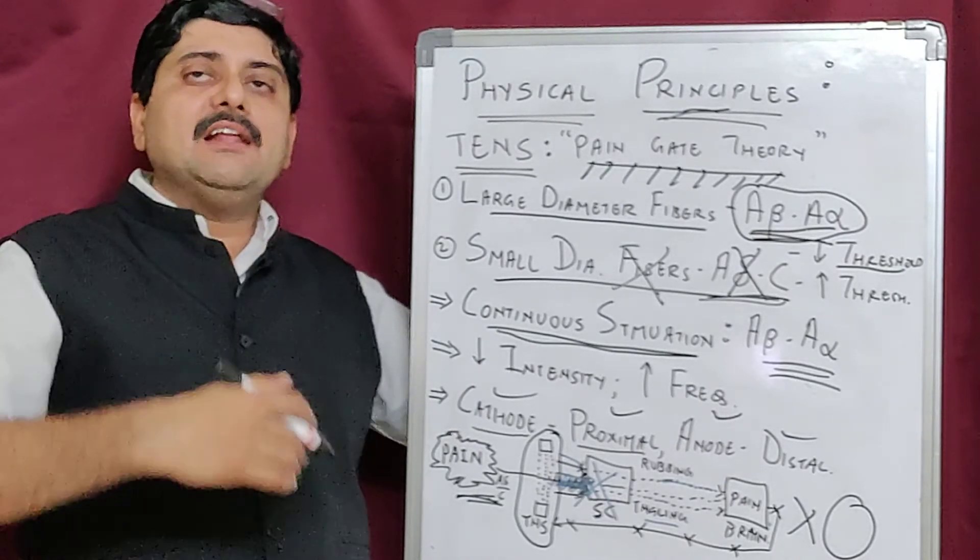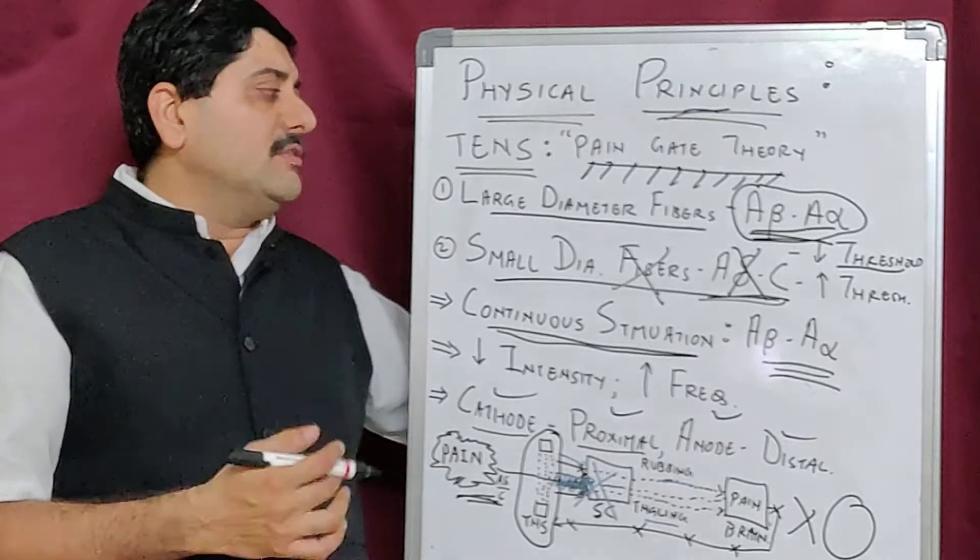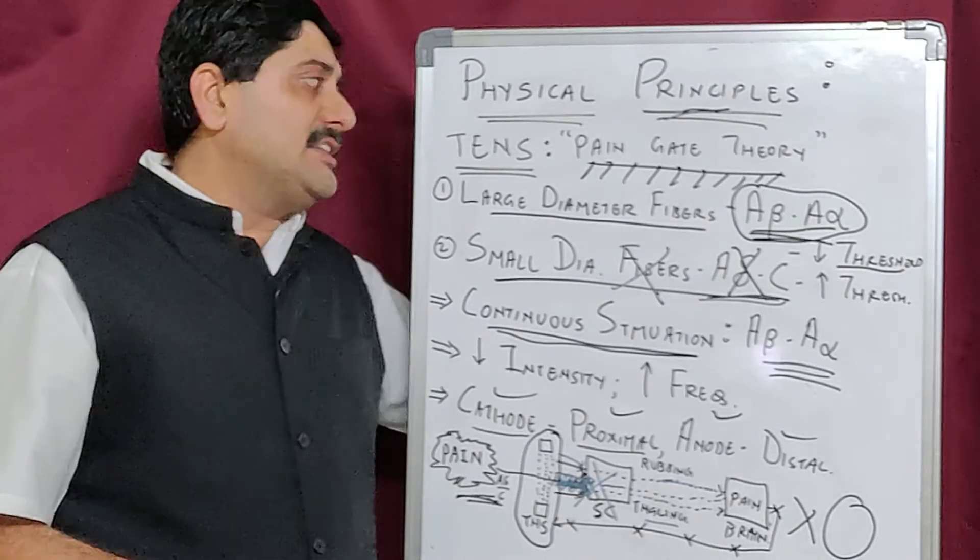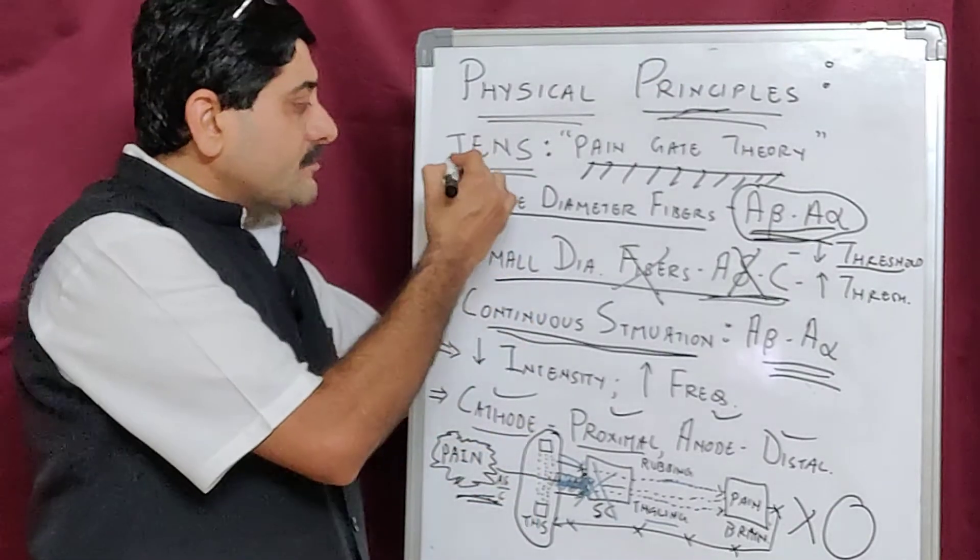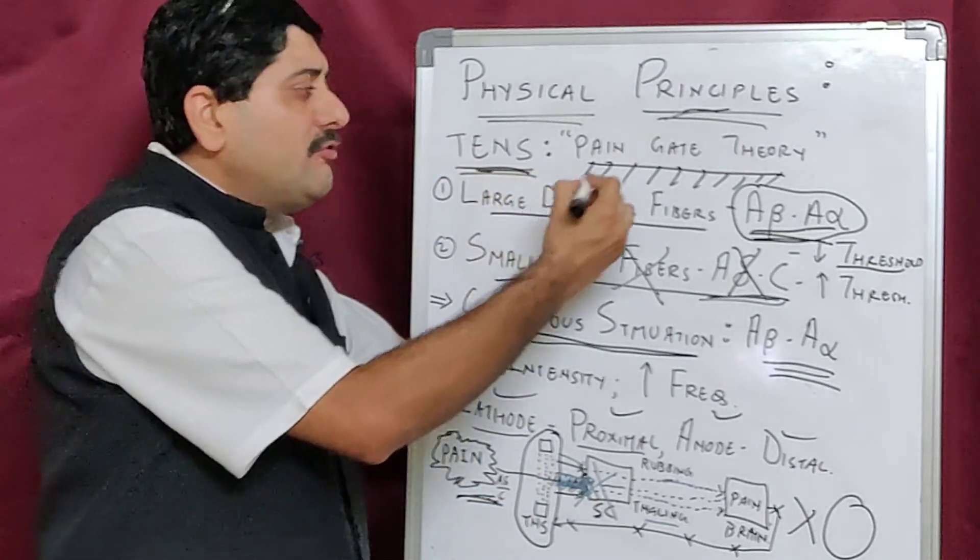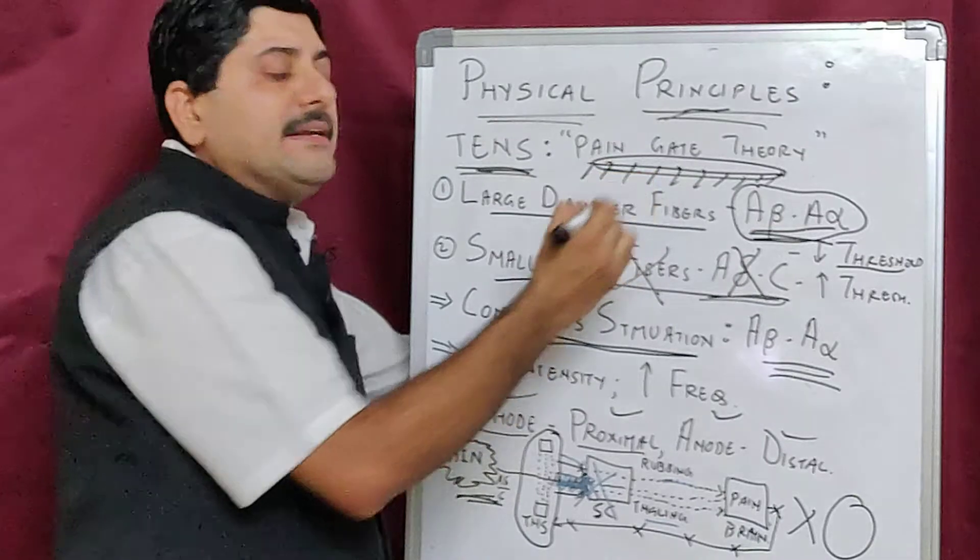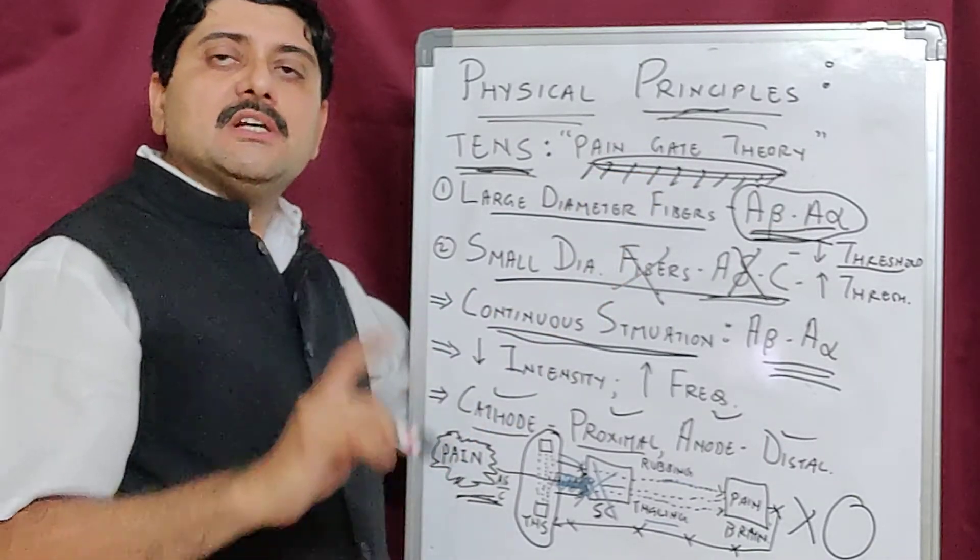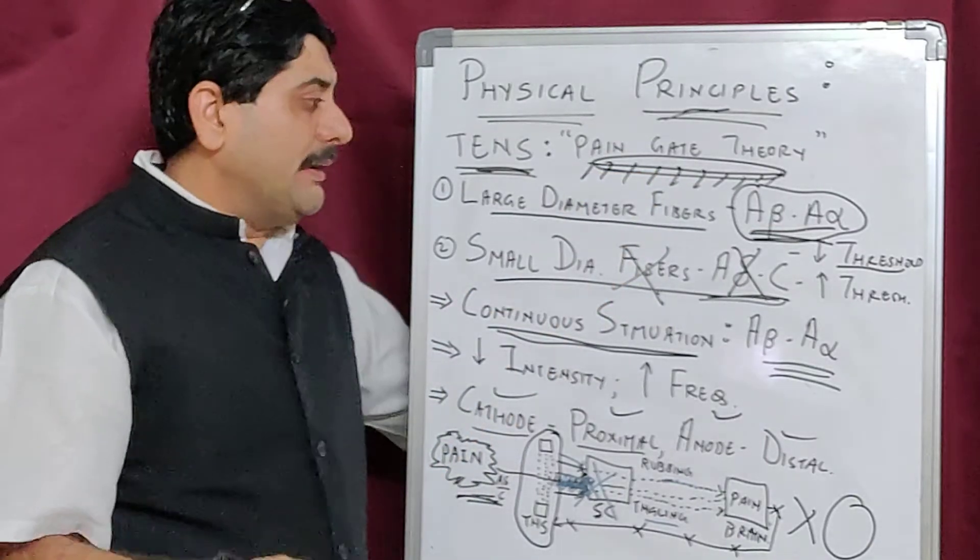To summarize this lecture: number one, TENS acts on the principle of pain gate theory. Pain gate theory means when the door is closed, the pain cannot enter the spinal cord.